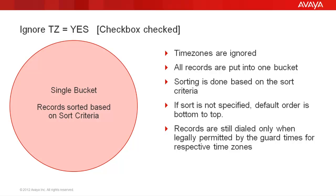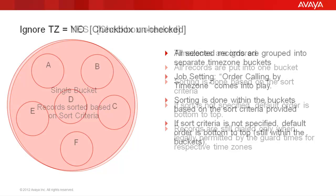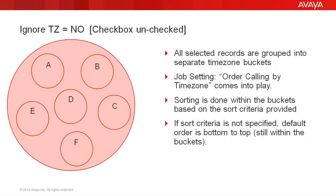You should not confuse this with the system calling the records out of the legally permissible guard times. The system will still dial the records only when the legally permissible guard times permit. Now let's see what happens when this setting is unchecked. This means that you are telling the system not to ignore the timezones. The selected records are separated into their respective timezone buckets, and within each bucket, the records are sorted based on the sort field specified in your selection. If no sort is specified, it's the bottom-to-top method, but within the bucket itself.